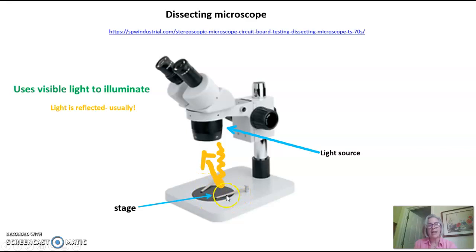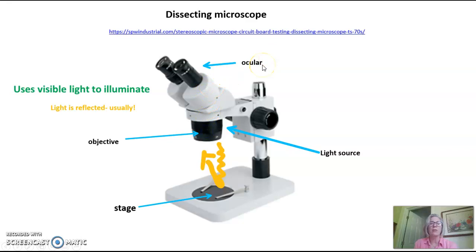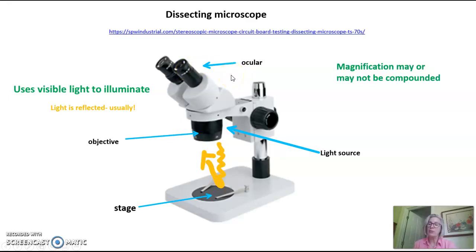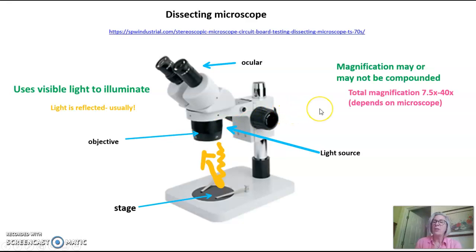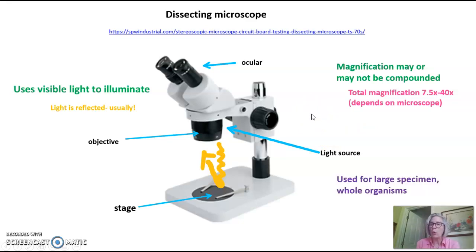Your specimen sits on the stage, and the light bounces off it and comes up to the objective — this large circular piece — where the first magnification occurs. The light then goes up through the ocular. These oculars may or may not provide a second place of magnification, so sometimes dissecting microscopes compound the magnification, and sometimes they just have the magnification of the objective. The total magnification is very low — between 7.5x and 40x — so think of this dissecting scope like a magnifying glass that you don't have to hold.